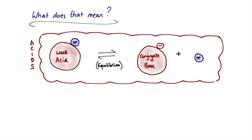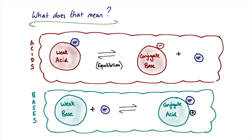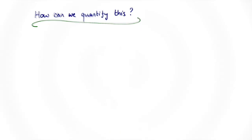The same argument applies to bases. A weak base, which is a proton acceptor, can accept a proton and become a conjugate acid. At equilibrium there will be a certain amount of each species, and the relative proportions are determined by the stabilities of the weak base and the conjugate acid. We can then quantify the degree to which the equilibrium lies on one side or the other.